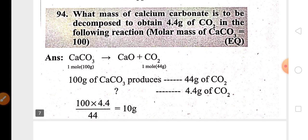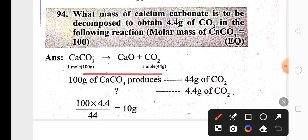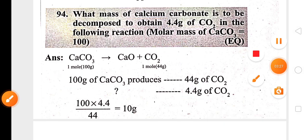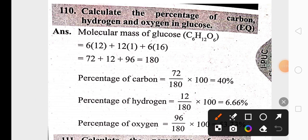One more example related to stoichiometric coefficients: the decomposition of calcium carbonate. The molar mass of calcium carbonate is 100 grams. 100 grams of calcium carbonate produces 56 grams of calcium oxide and 44 grams of carbon dioxide. In the question, if you want 4.4 grams of carbon dioxide, you need to decompose 10 grams of calcium carbonate.